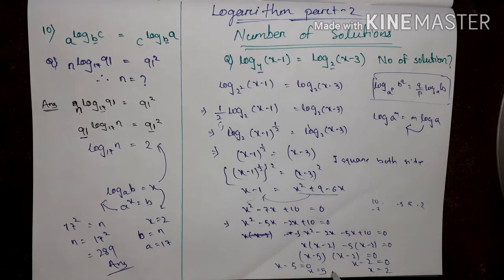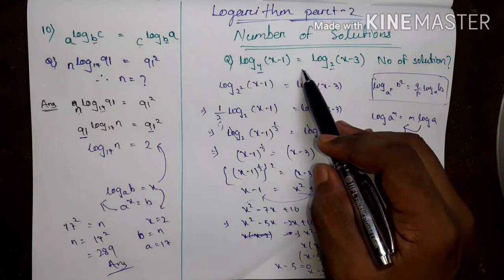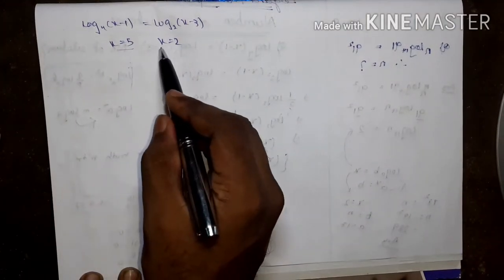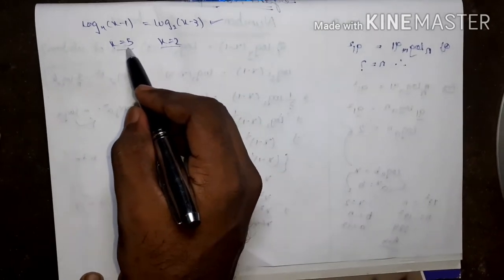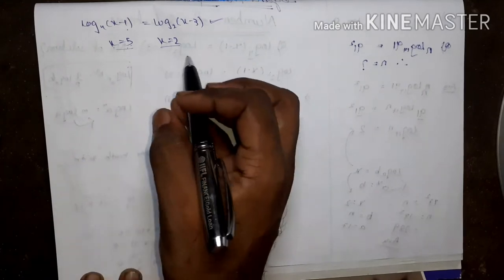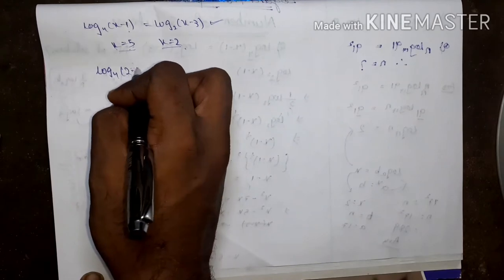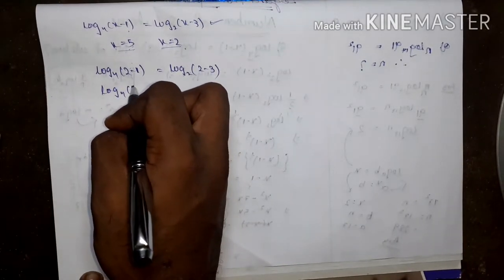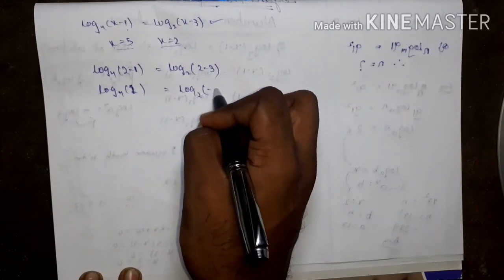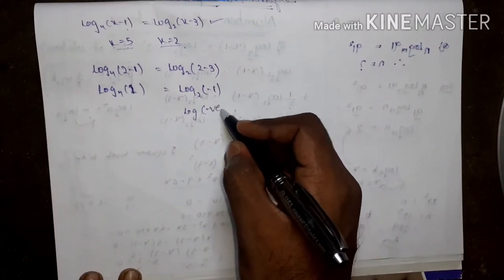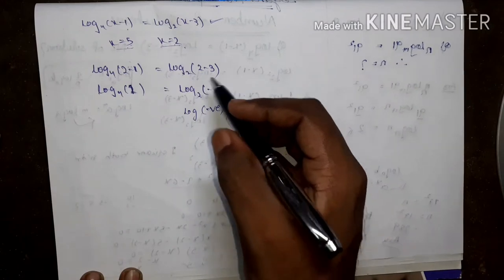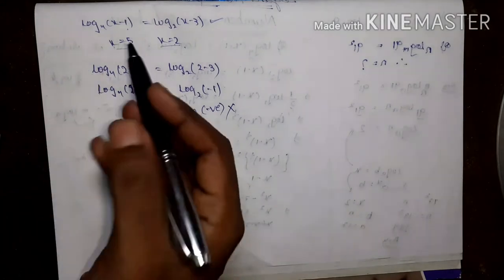We get x equals 5 and x equals 2. But this is not final — we have to apply these values of x in the original equation to check if they are satisfied or not. First put x equals 2: log_4(2-1) equals log_2(2-3), giving log_4(1) equals 1, but log_2(-1) — the log of a negative cannot be determined. So x equals 2 is not satisfied.